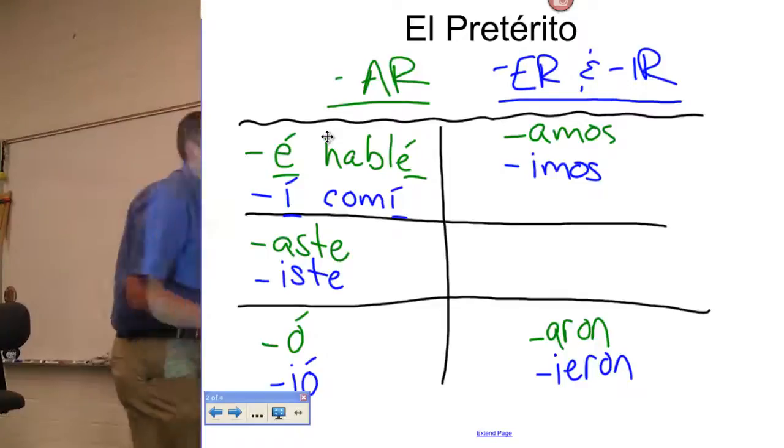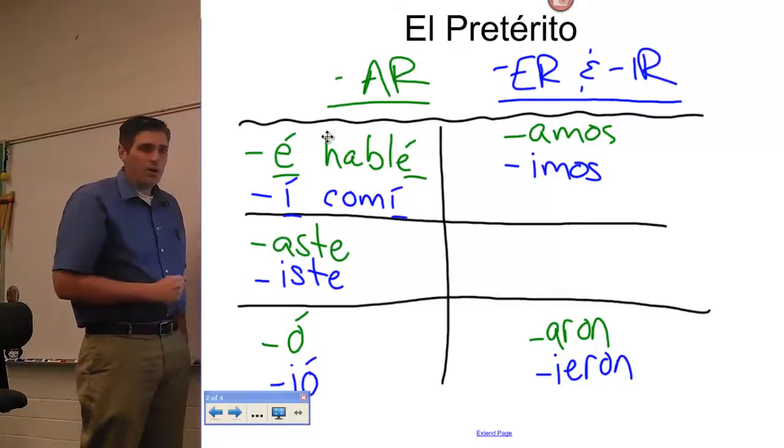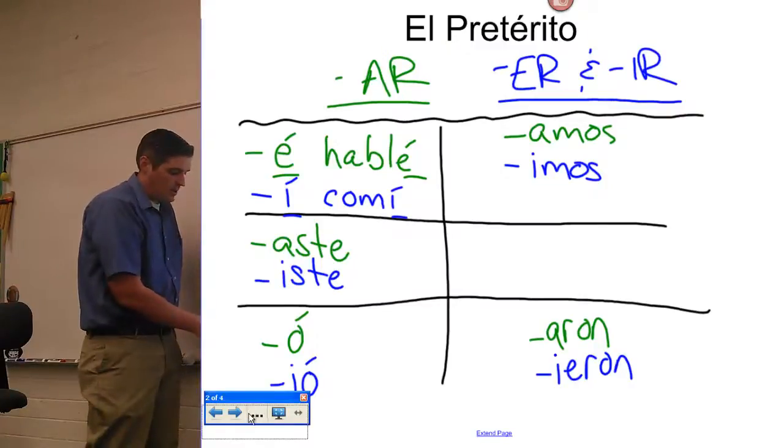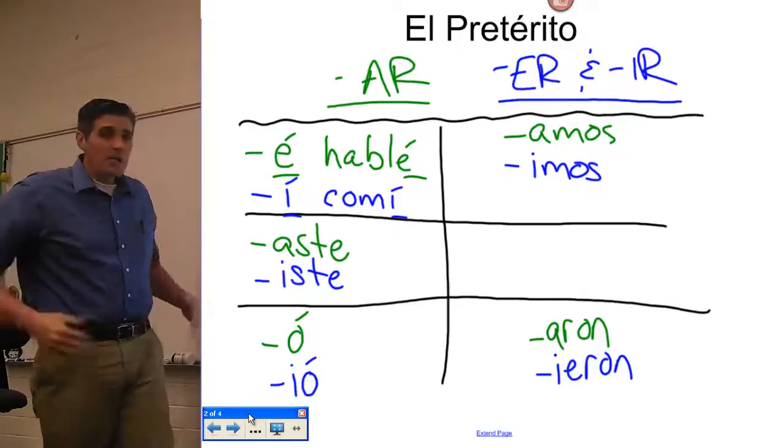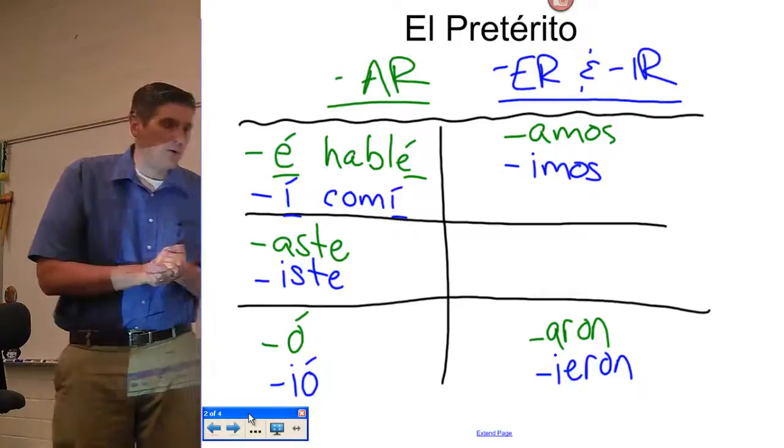So once again, e, aste, o, amos, aron are your endings. Or i, iste, yo, imos, ieron are your endings for ERs and IRs. That should be reviewed. I'm not going to spend a lot of time on it. I just want to remind you real quick what those were.